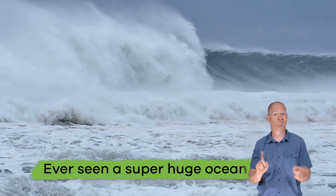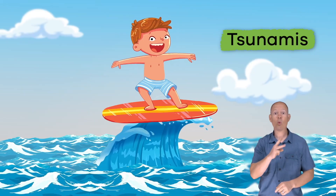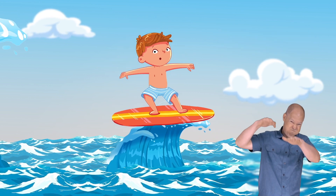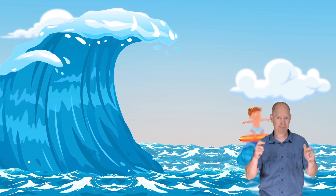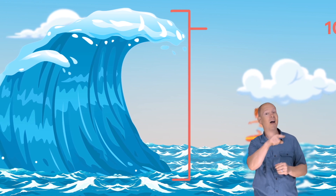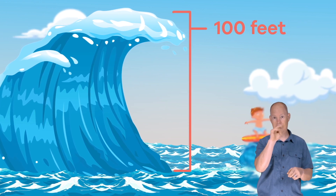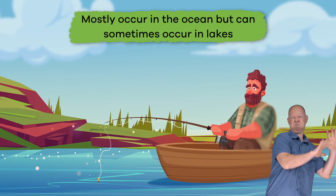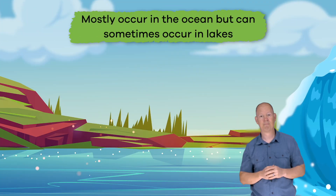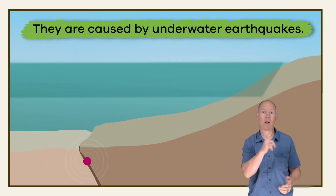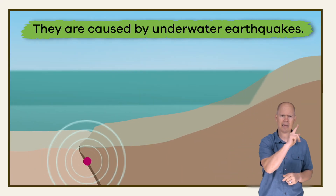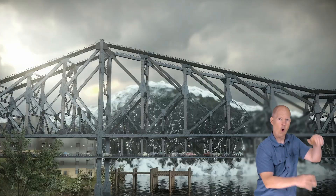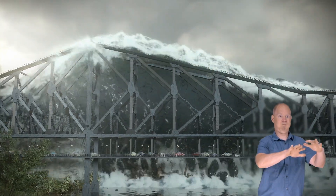Ever seen a super huge ocean wave? Tsunamis make those waves look tiny. These giant water waves surge onto land and reach heights of up to 100 feet. Tsunamis mostly occur in the ocean but can sometimes occur in lakes. This is because they are caused by underwater earthquakes — the vibrations cause a disruption in the water, which causes the huge wave.